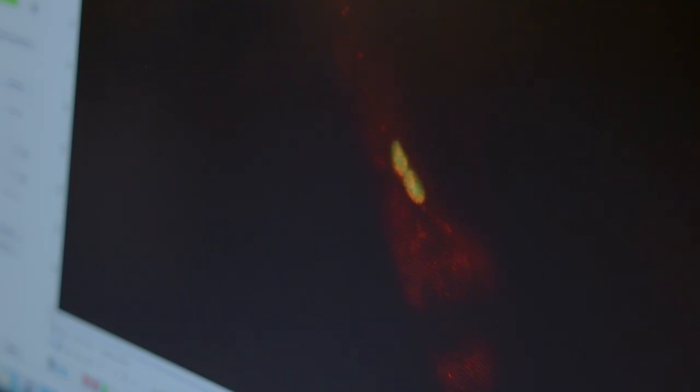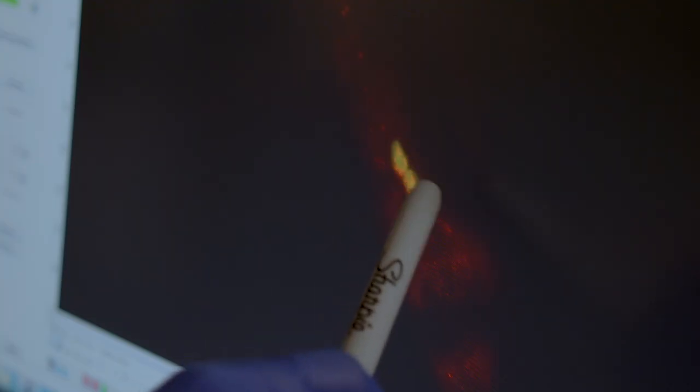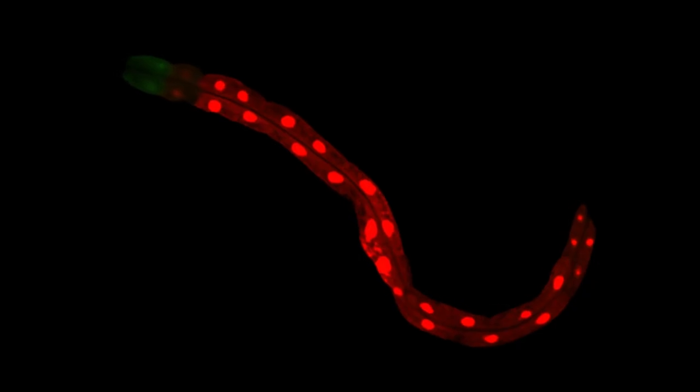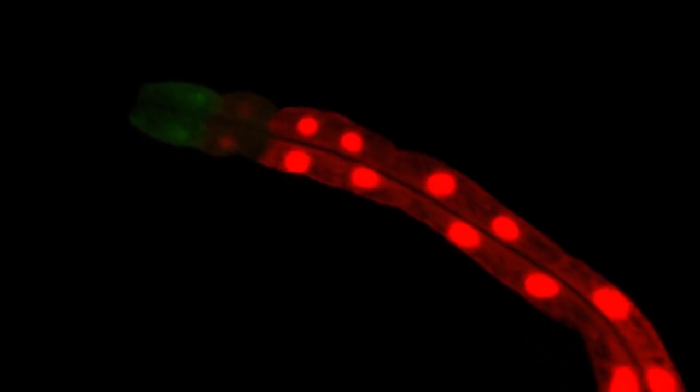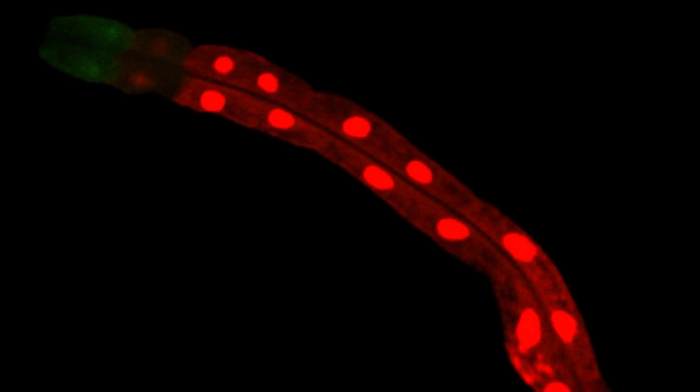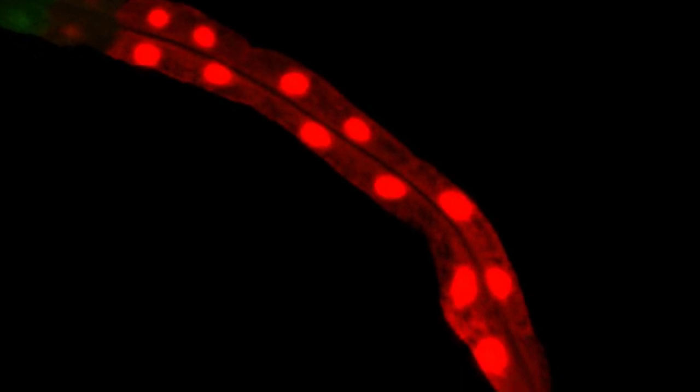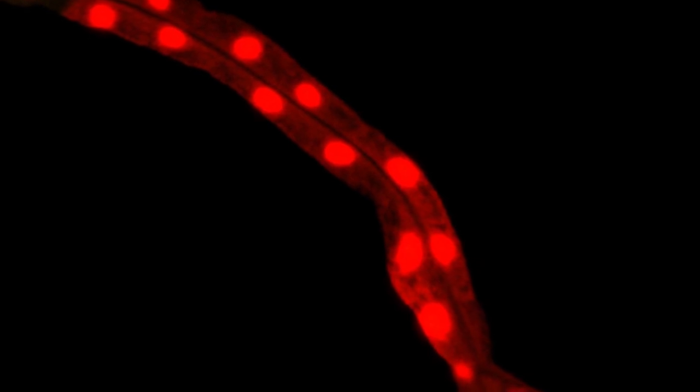We do our experiments primarily on a model system called C. elegans for short, and it's a tiny microscopic worm. It's about a millimeter in length and is most easily visualized through a microscope. It's comprised of about 20,000 genes within the genome of which two-thirds are conserved in humans. And so this small system is very amenable to molecular genetics and manipulation at the level of individual genes or multiple genes in combination.